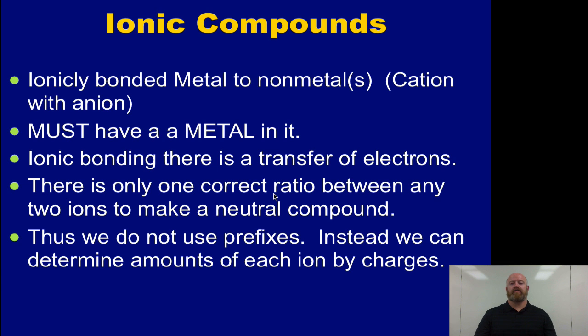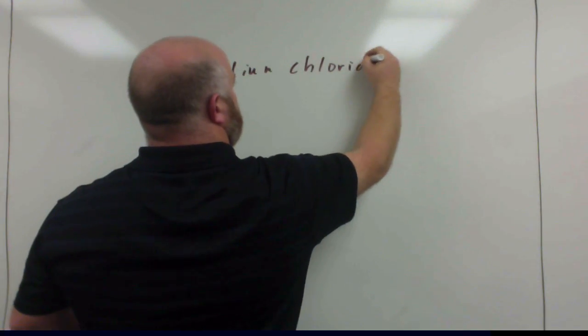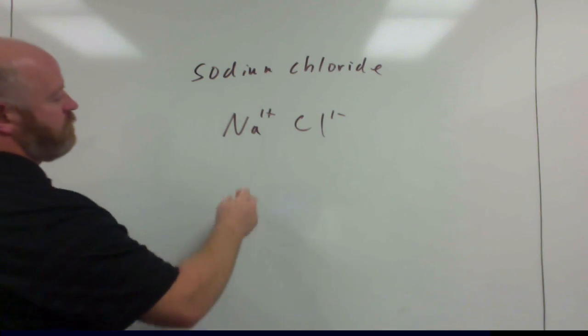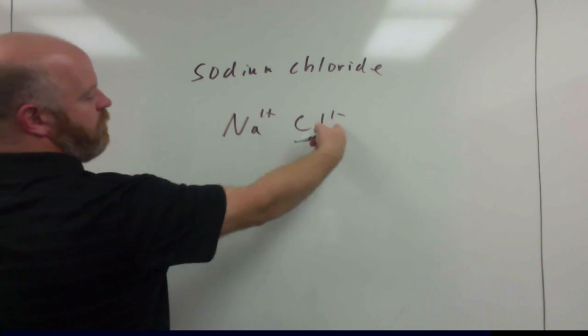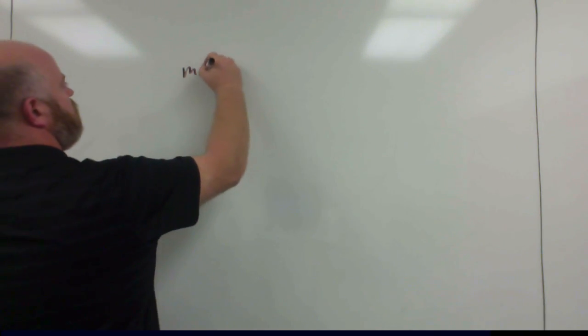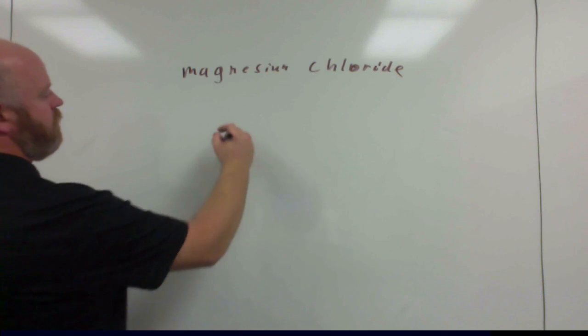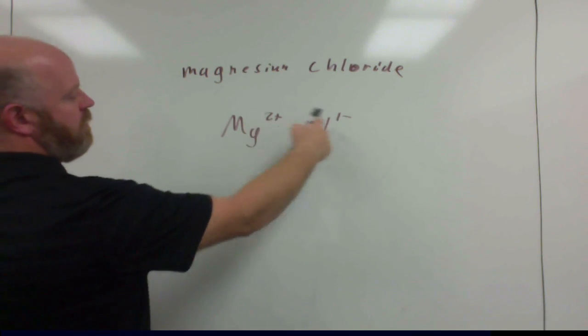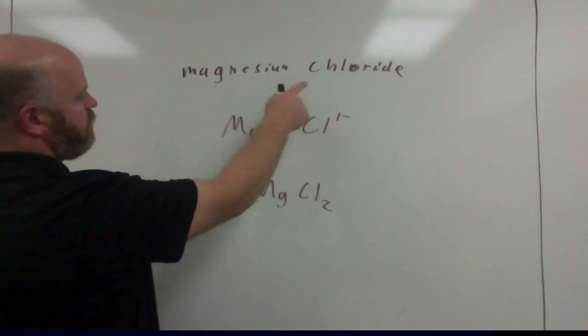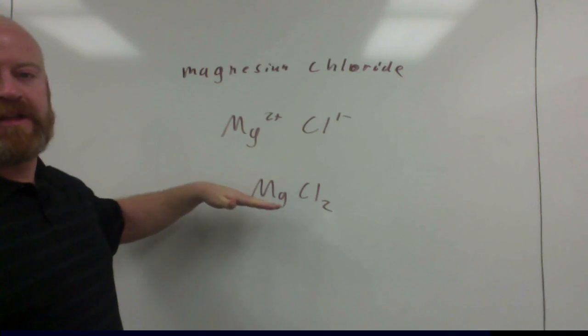When I say sodium chloride, for example, I have sodium and I have chlorine. Sodium charges a one-plus, chlorine charges a one-minus. Every time sodium combines with chlorine, they're going to do so in a one-to-one ratio to make sodium chloride. However, if I had magnesium chloride, magnesium is a two-plus, chlorine is still a one-minus. This ratio would have to be one magnesium, two chlorines. There is no possible way of getting anything besides a one-to-two ratio here. We don't use prefixes with that because this is the only possible way that magnesium combines with chlorine.